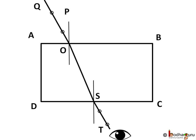We can assume QO as the incident ray and ST as the emergent ray coming to our eyes.